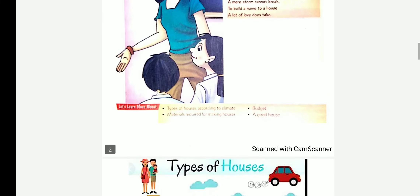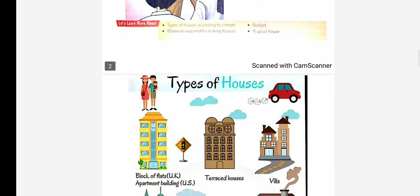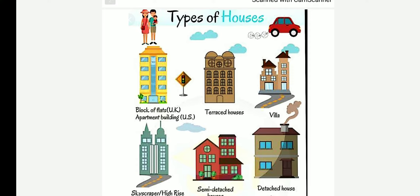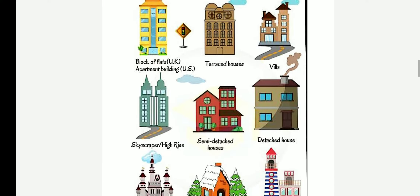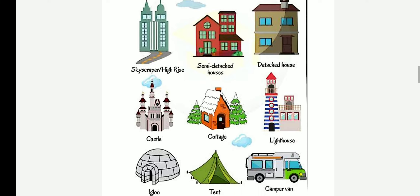Children, in the previous class you must have learnt about different types of houses. Here you can see pictures of different types of houses like tall buildings, caravan, tent, igloo, hut, cottage, etc. Do you know different materials are needed to make a house? Materials used for making a house depend upon the climatic condition of that place. Mainly, three factors determine the type of houses.